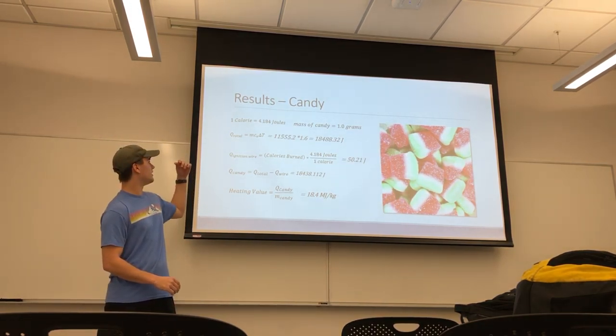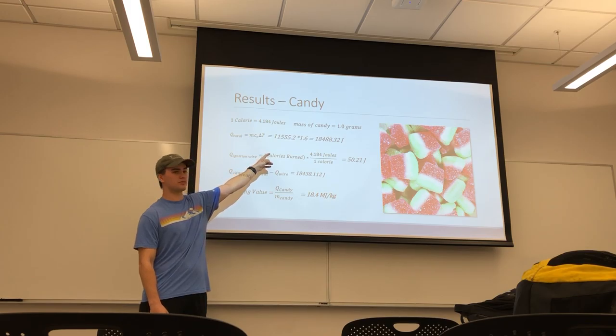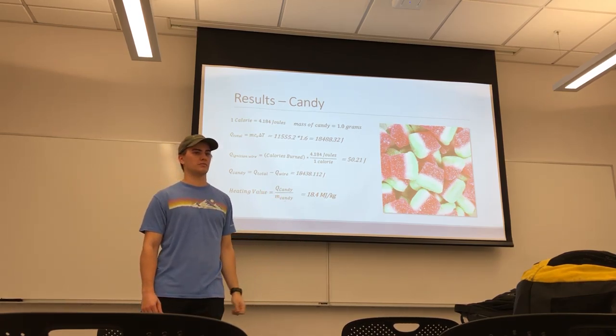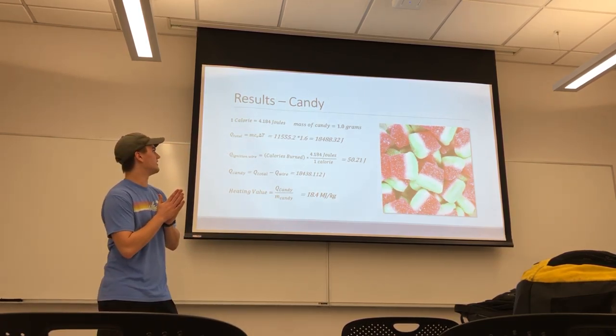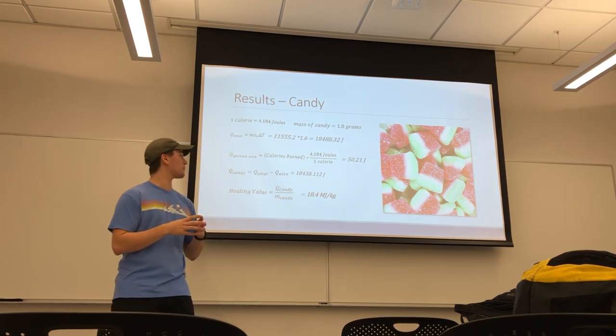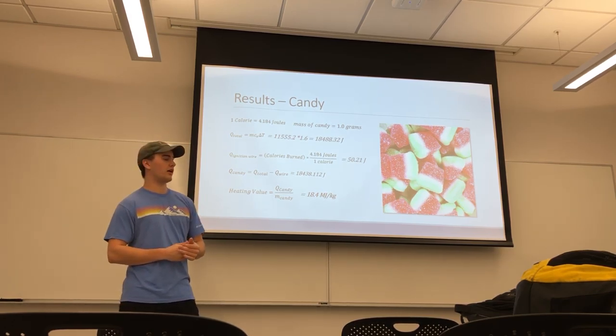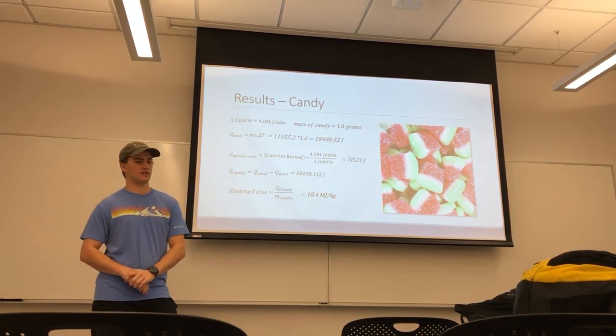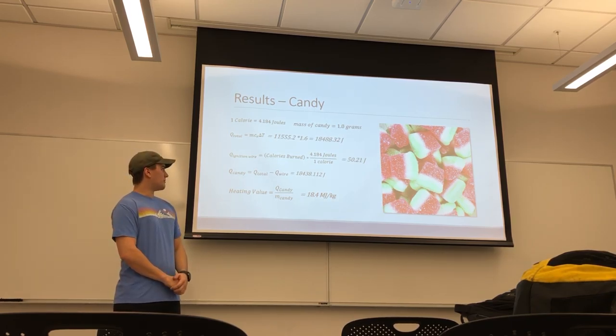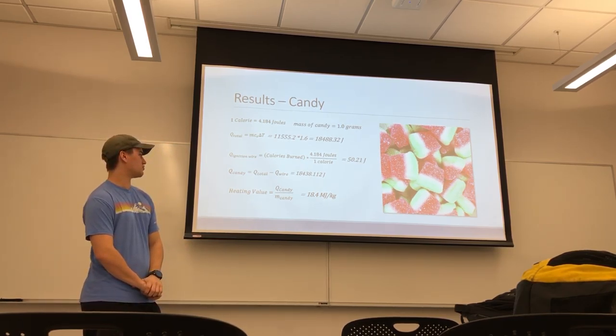And using the calculated MCV value from before, we can multiply that by the change in temperature that we saw when combusting the candy. And we can see how much heat transfer total was used in this portion of the experiment. Then we can subtract the amount of heat transfer that went into combusting the wire. And we can find the amount of heat transfer that went into the piece of the candy. After we have the heat transfer that went into the candy, we can divide it by the mass of the candy, which was about a gram. And we get 18.4 megajoules per kilogram.